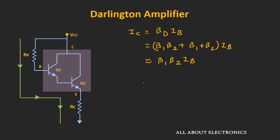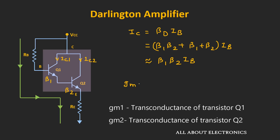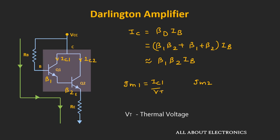The collector current Ic is equal to β1·β2 plus β1 plus β2 times Ib, or approximately β1 times β2 times Ib. Commercially, as this Darlington pair is available in a single package, the value of βd is given for the entire pair. For academic purposes, if we know β1 and β2, we can find the internal collector currents Ic1 and Ic2, and from those, the transconductance values gm1 and gm2, where gm1 = Ic1/Vt and gm2 = Ic2/Vt.